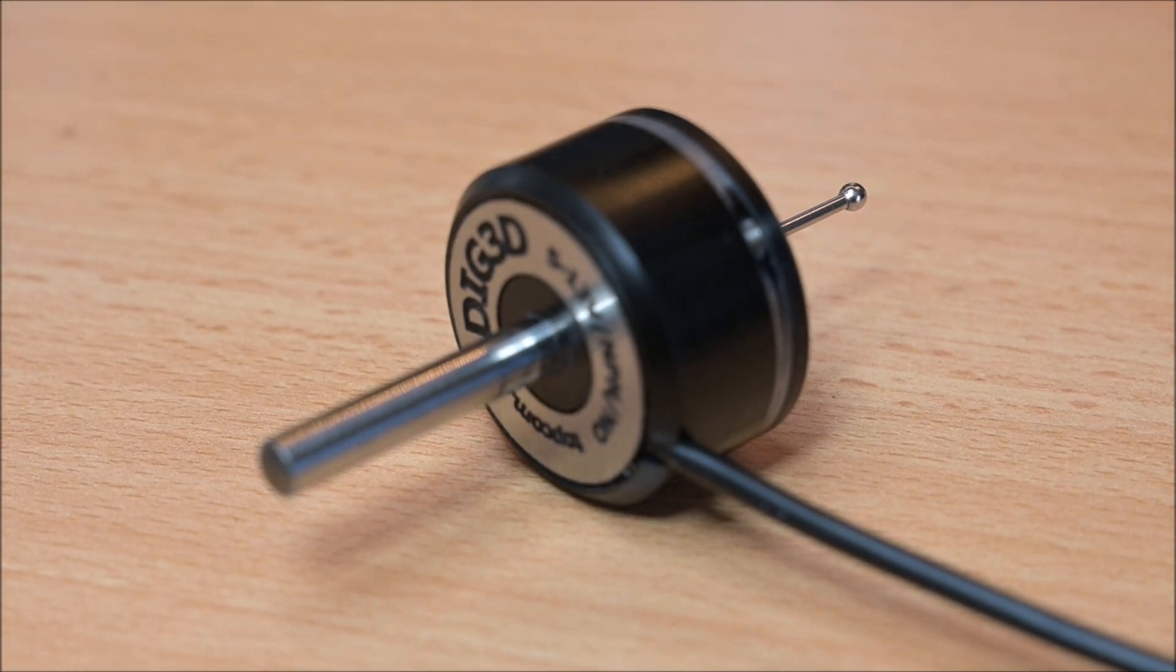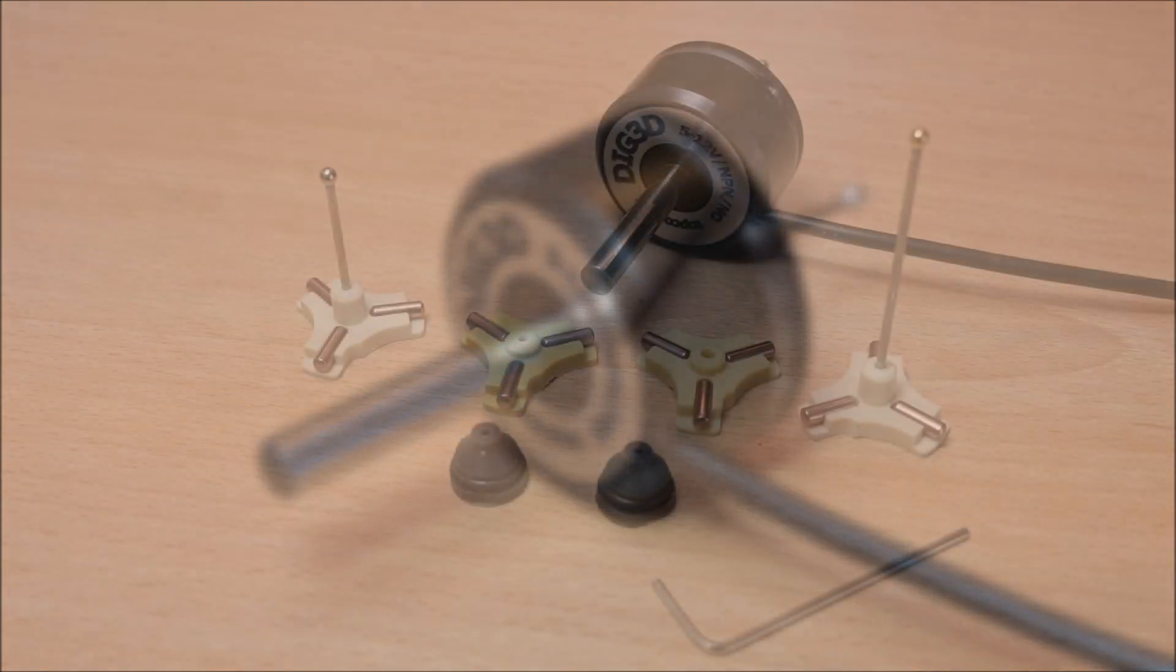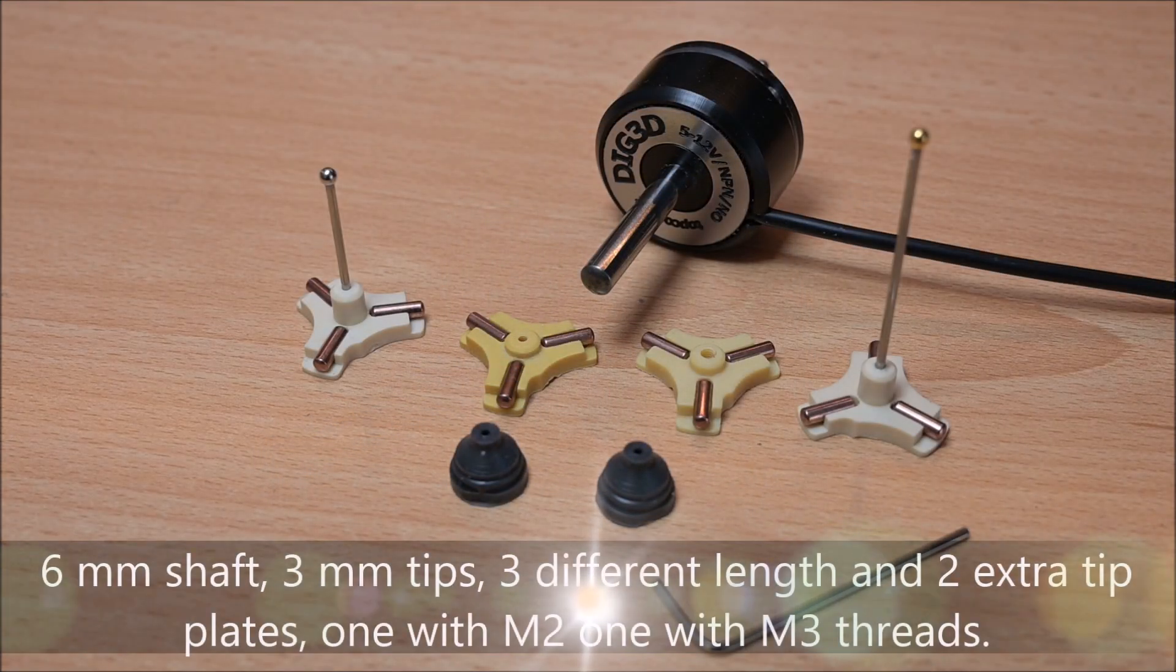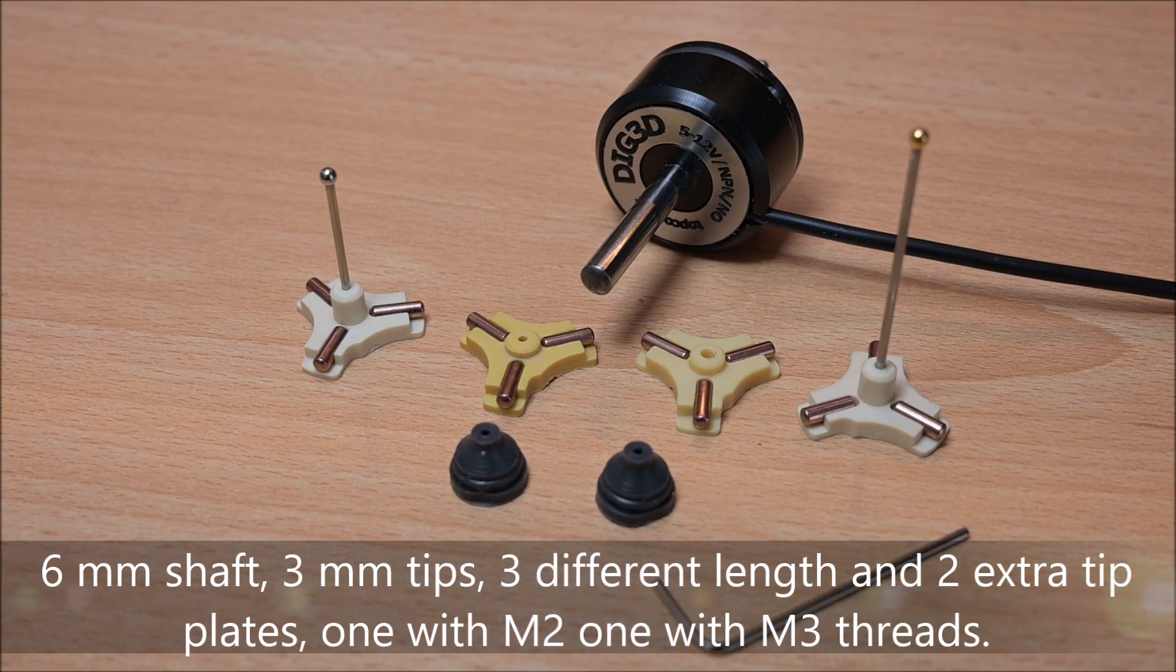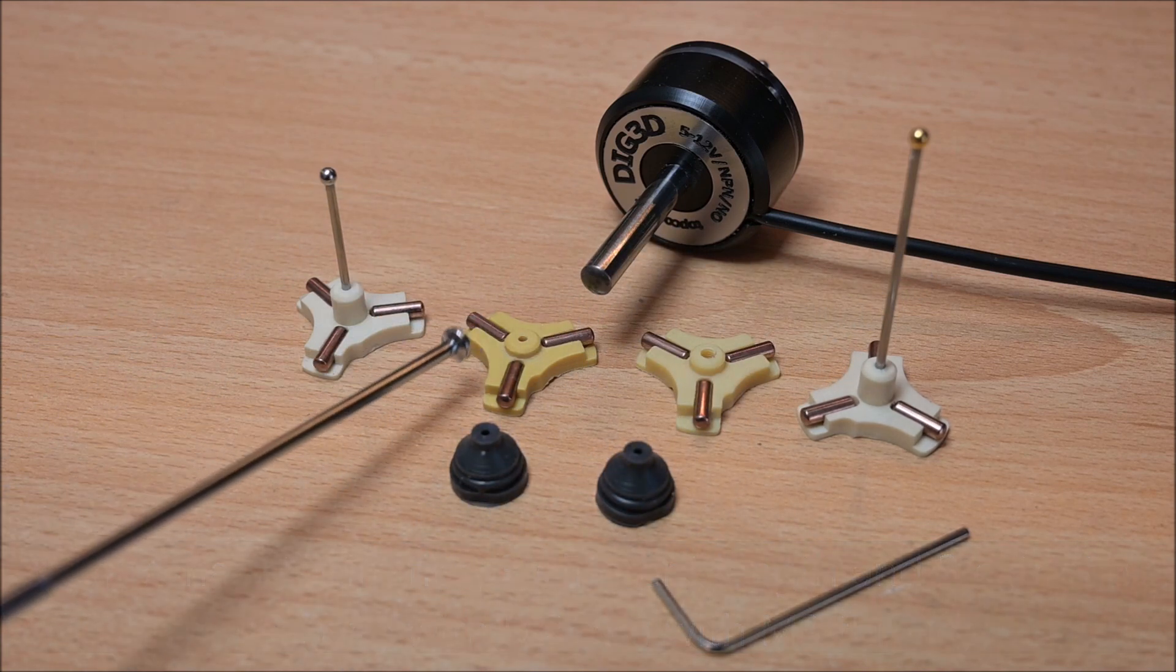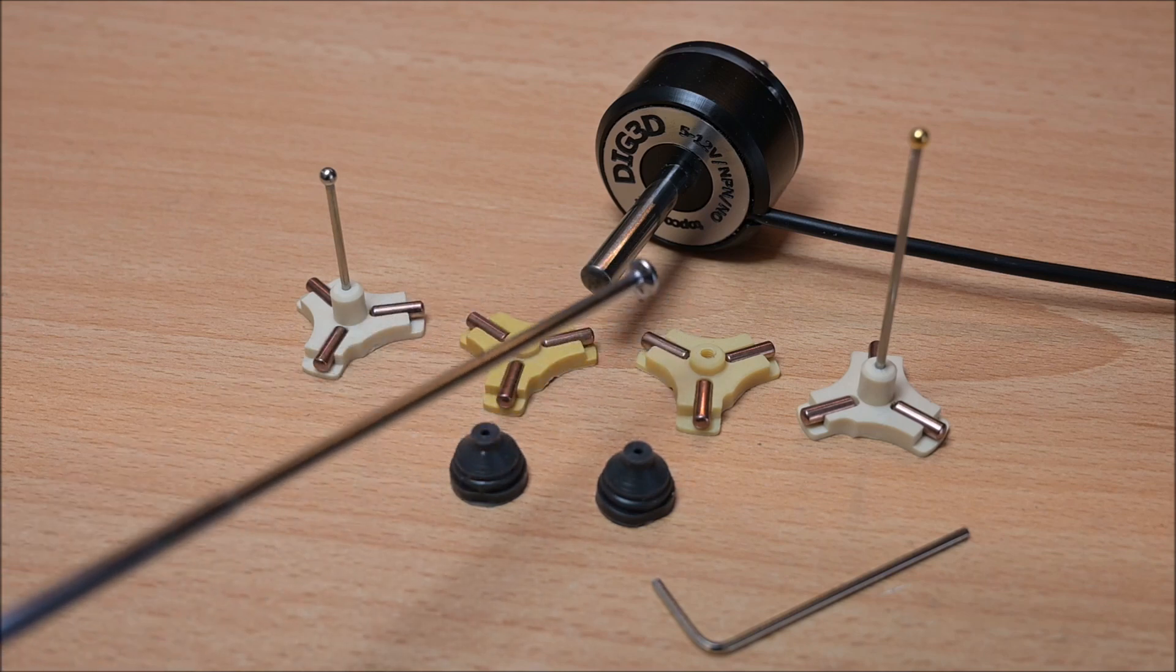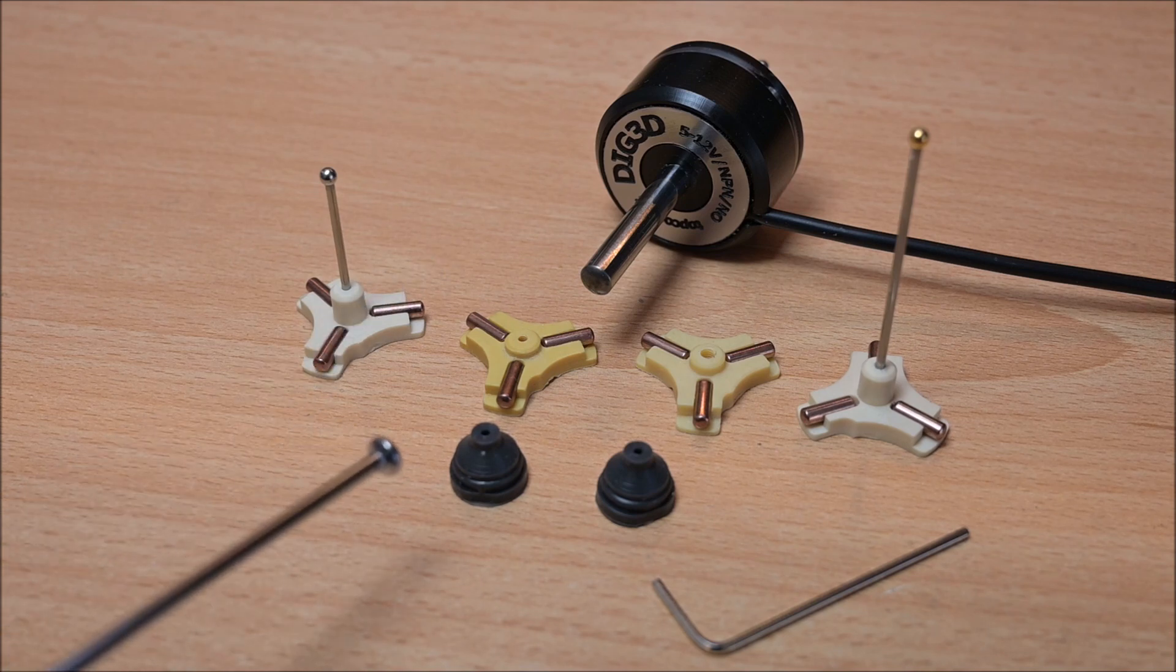It's a small 3D probe made by a Czech company called Dig3D, sold on eBay and through their website. It has a 6mm shaft which is perfect for my CNC, and came with three pieces of probe tips all having 3mm diameter tips, plus two extra plates.